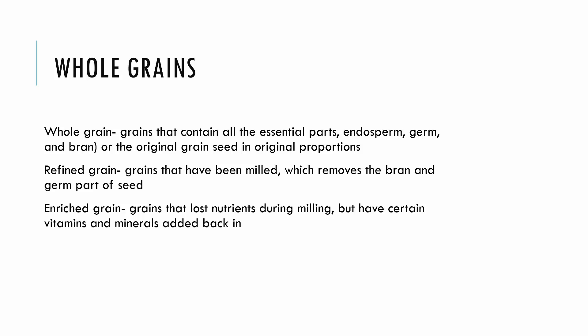What about whole grains? A whole grain contains all of the essential parts: endosperm, germ, and bran. A refined grain has been milled, removing the bran and germ — this is whole grain flour versus white flour. An enriched grain is one that was refined but has certain vitamins and minerals added back in. You may see enriched white flour on food labels because they removed the bran and germ but added some vitamins and minerals back.